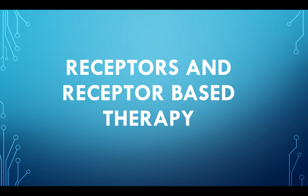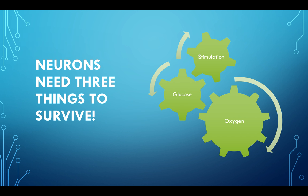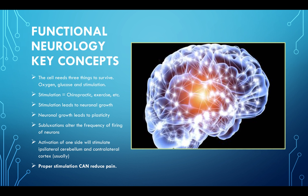For receptors and receptor-based therapy, my background is in functional neurology, so neurons need three things to survive: oxygen, glucose, and most importantly, on our end as providers of manual therapy like chiropractic, they need stimulation. Some key concepts to keep in mind throughout this week.